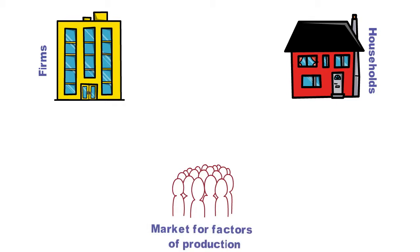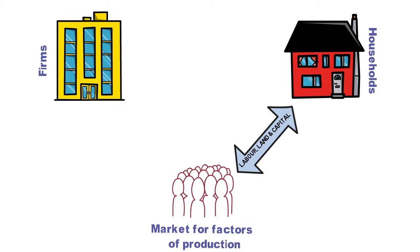To link those two together, we also have a factor market for production. This market combines both households and firms and lets them interact together. The types of things they interact with are labor, land, and capital — these are provided by households as the raw materials for production — and households receive an income for this. This is one way to measure the size of an economy.